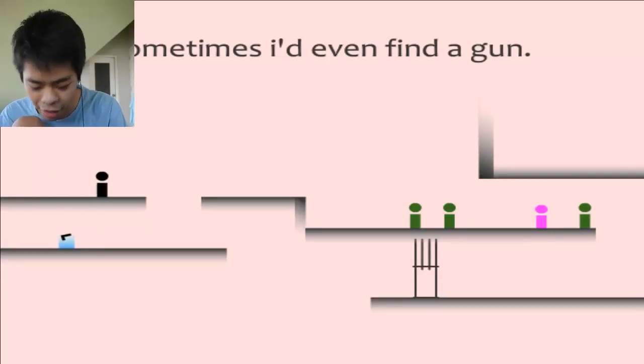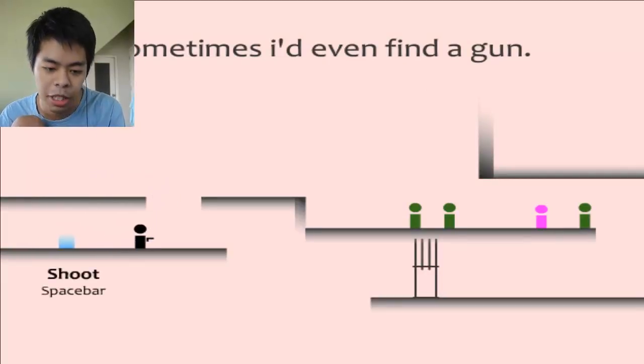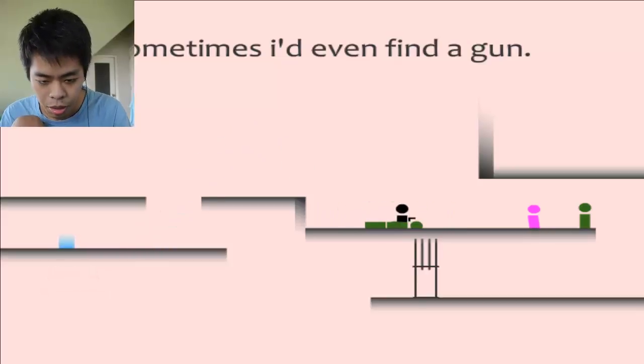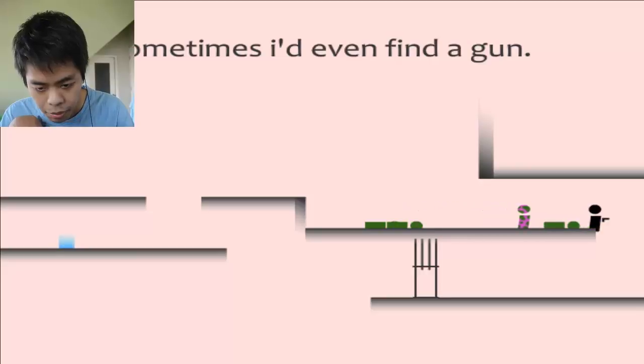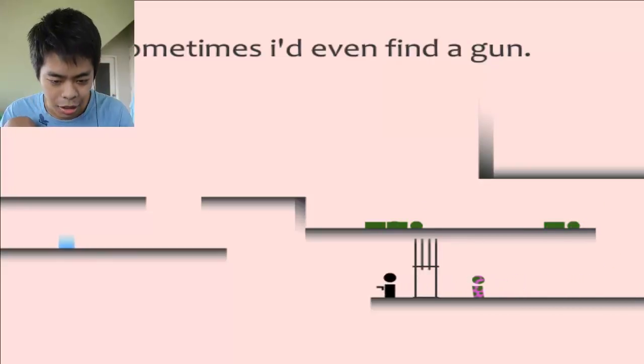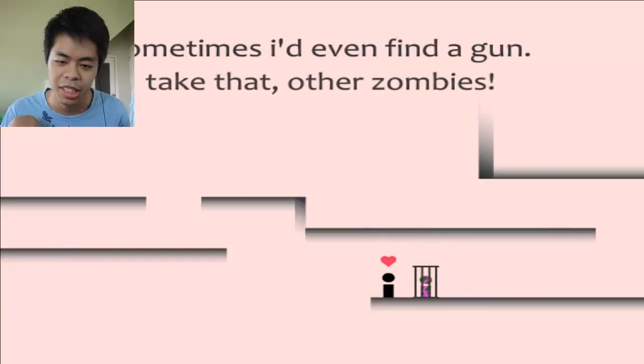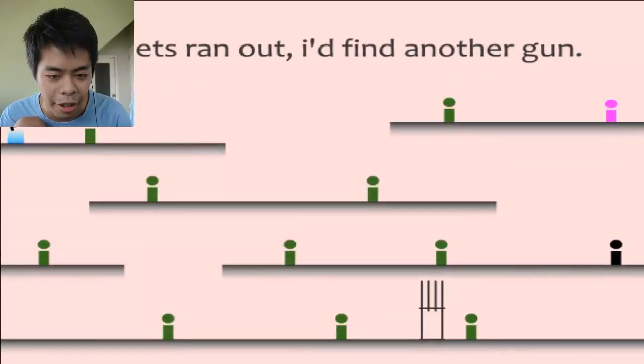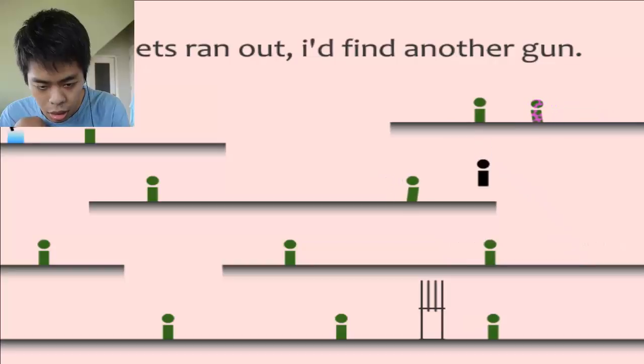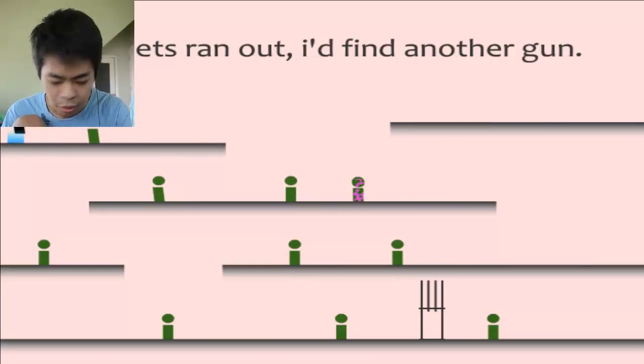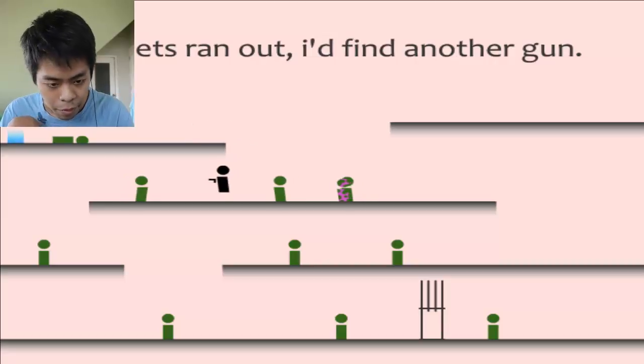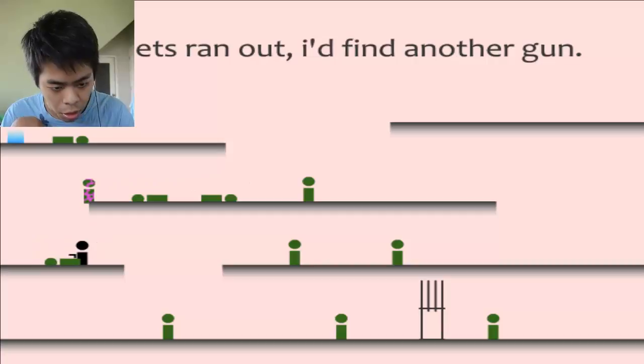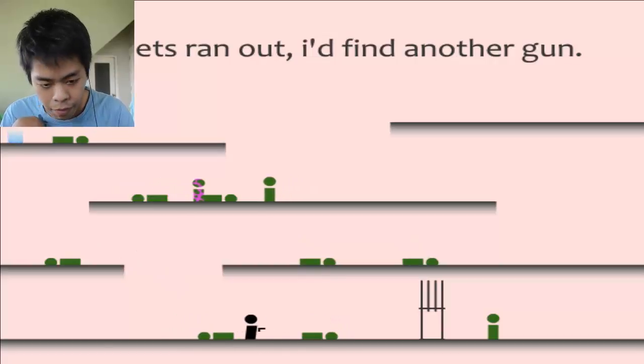Sometimes I even find a gun. This is the fun part. So I cannot shoot the girl. Yeah, spacebar. One, two. That's close. Take that, other zombies. If bullets run out, I find another gun. We need security right.